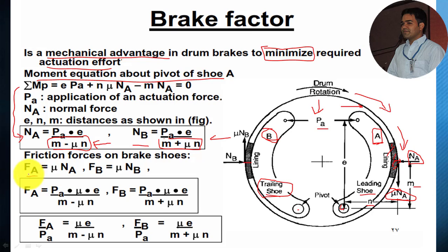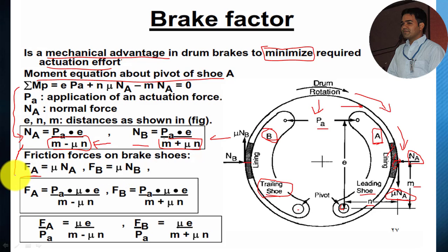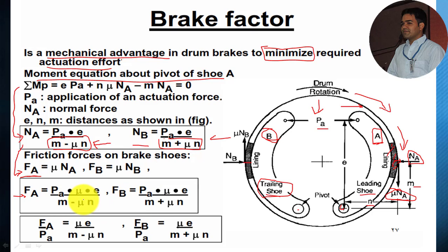The friction force on both brake shoes can be defined as normal force times the coefficient of friction mu. So for shoe A: Fa equals mu times Na, and for shoe B: Fb equals mu times Nb. With the help of these two equations, we can write the friction force in terms of actuation effort. So Fa equals Pa times mu times e divided by (m minus mu times n), and likewise for shoe B the only difference is the plus sign in the denominator.